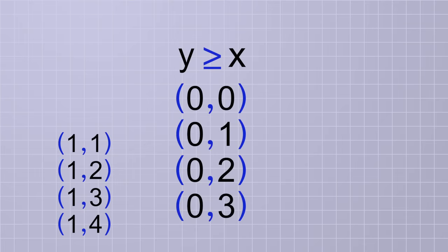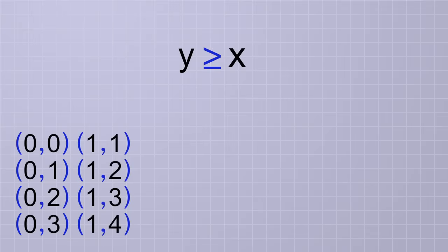Let's make ordered pairs from those also. And then let's ask, what are some possibilities if we let x be negative 1? In that case, y could be negative 1, or anything greater than negative 1, like 0, or 1, or 2, and so on.